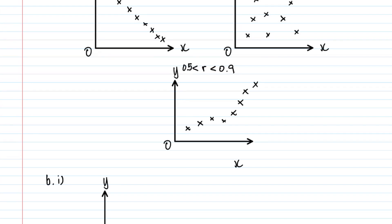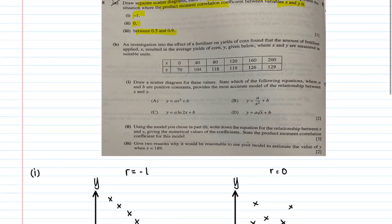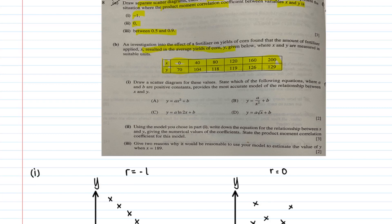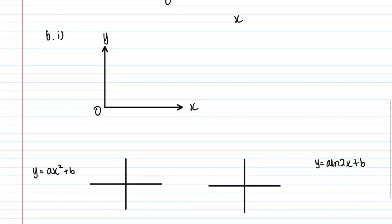The next part describes an investigation into the effect of fertilizer on yield of corn, where x is the amount of fertilizer and y is the average yield. You are given a table of values. Draw a scatter diagram and determine which of the four given equations — where a and b are positive constants — best models the relationship between x and y.